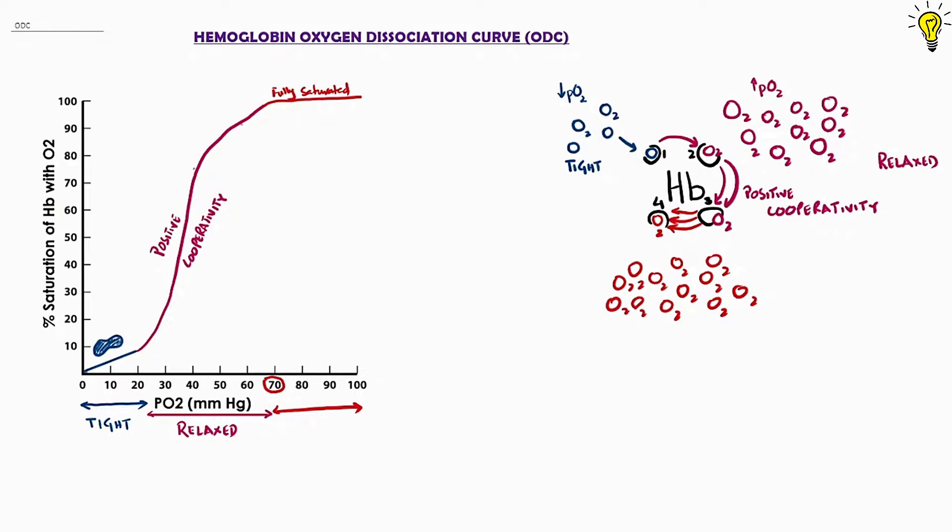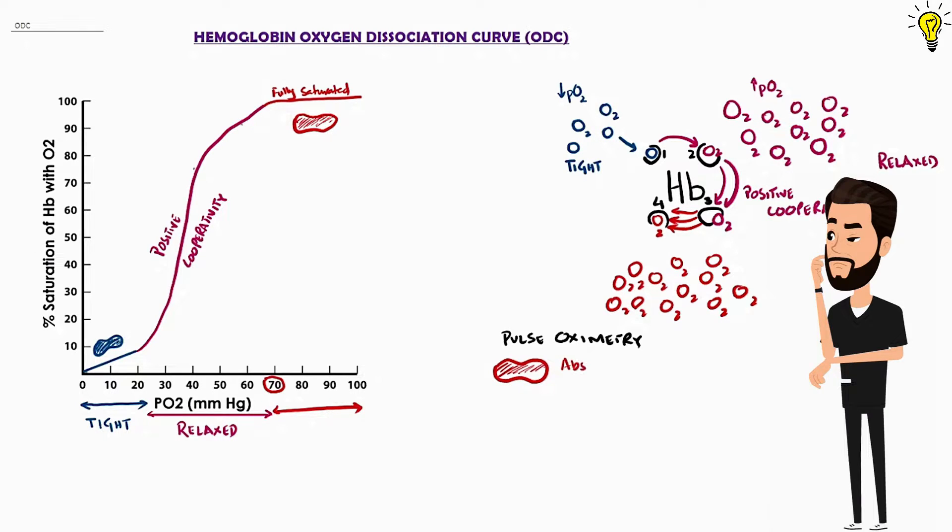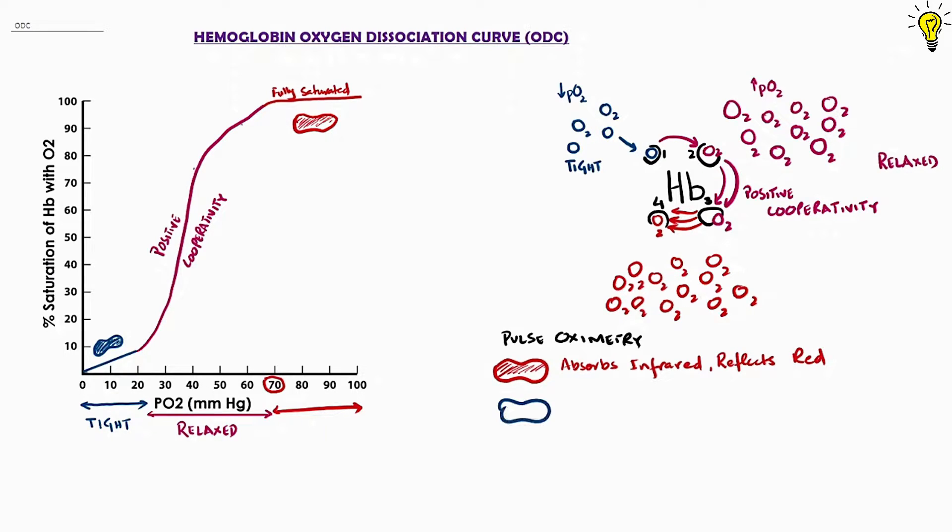This is the principle behind pulse oximetry. The device transmits infrared and red wavelengths. The oxyhemoglobin absorbs the infrared and reflects back red, whereas deoxyhemoglobin absorbs red. And this is why desaturation causes cyanosis, clinically appearing blue.